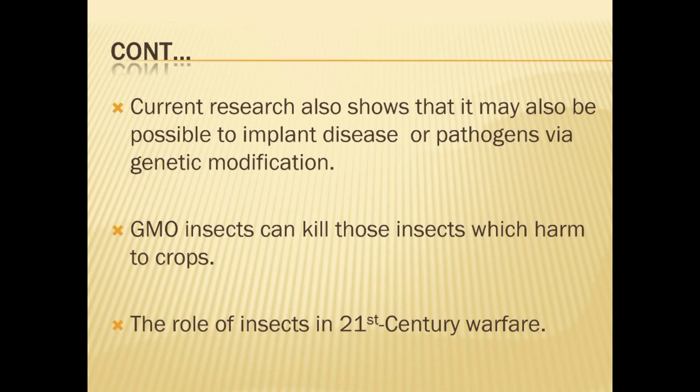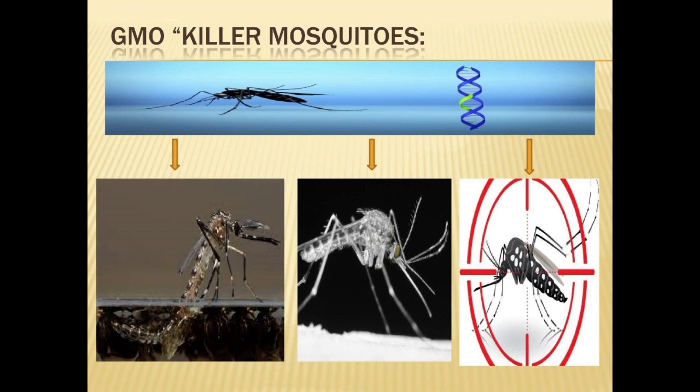Modified insects can also be useful for killing the types of insects that spread diseases to crops. Here you can see GMO killer mosquitoes: the first one is genetically modified for Zika virus, the second for West Nile virus, and the third GMO mosquito could potentially be used to implant disease or pathogens via genetic modification for use in warfare.